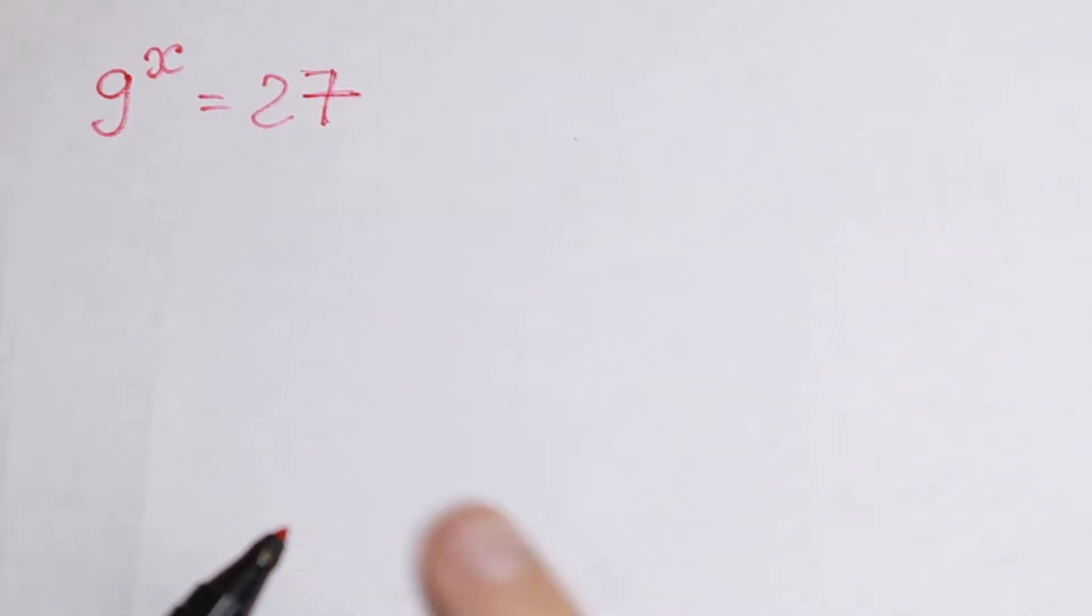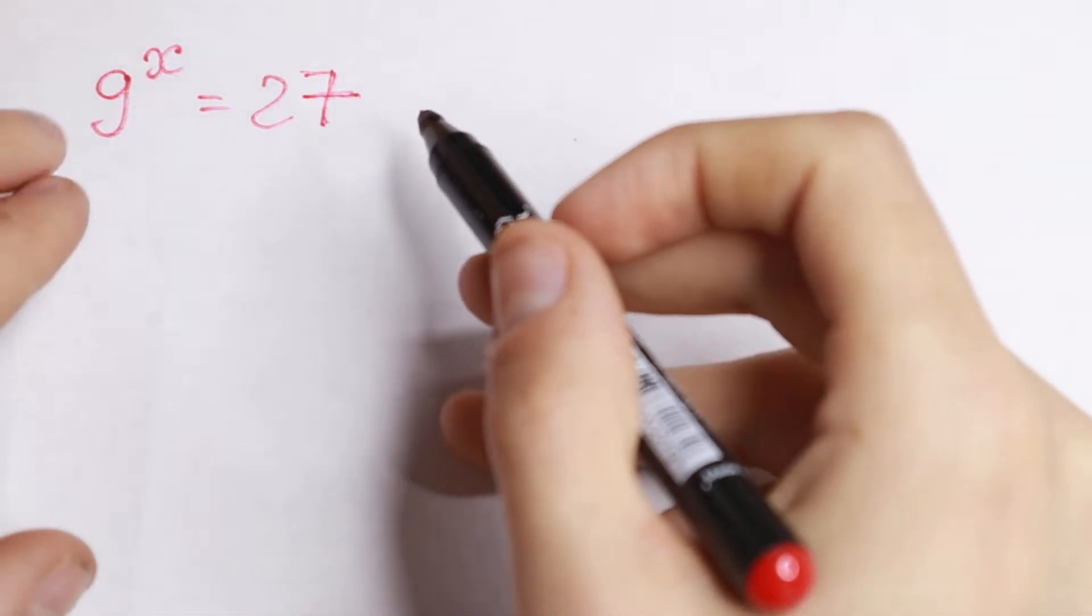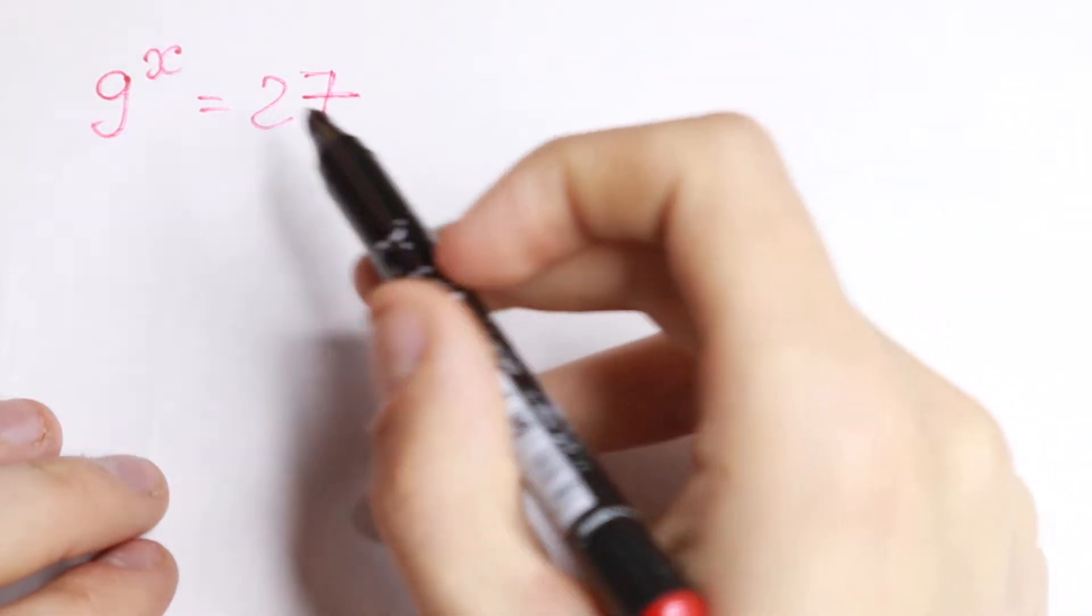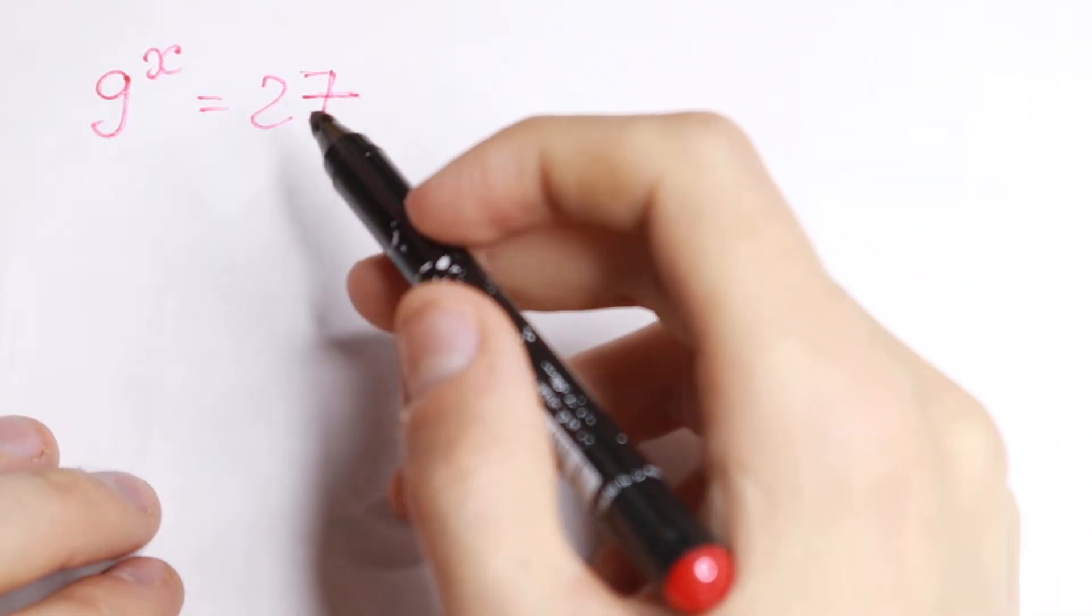Hello everyone! Welcome back to MathMove! Today we have an interesting equation. We have 9 to the power x equal to 27 and we need to find our x.